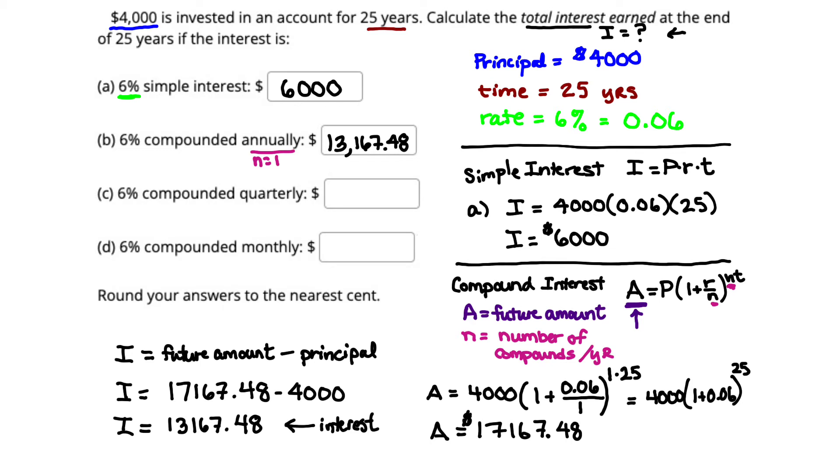The only thing that actually changes between Part B and Part C is the number of compounds per year. So if you look, instead of compounding annually for Part C, we're actually compounding quarterly, which means four times a year. So we're going to repeat the same process, but this time, instead of n being one, we're going to change it so that n is actually four.